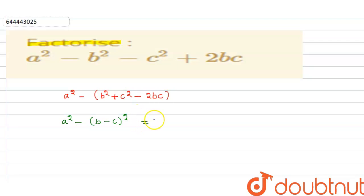So that is equal to a plus (b minus c) into a minus (b minus c). And this minus that minus becomes plus, so it is equal to (a plus b minus c) into (a minus b plus c). So these are the factors of this algebraic expression.